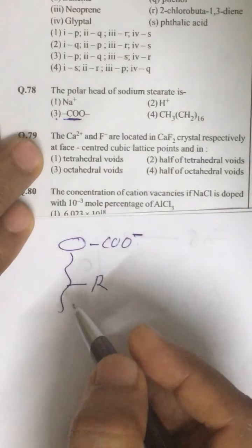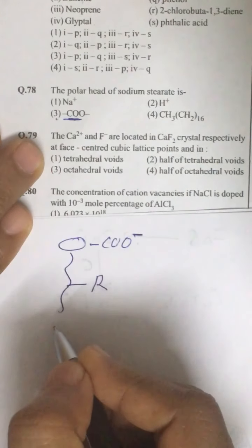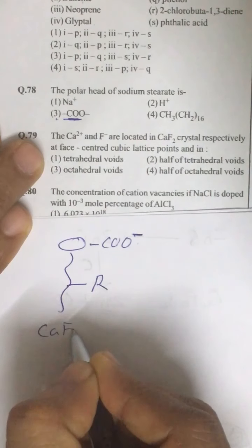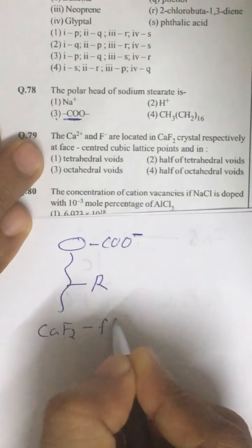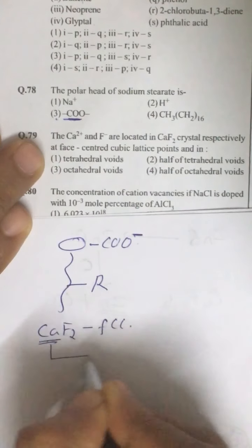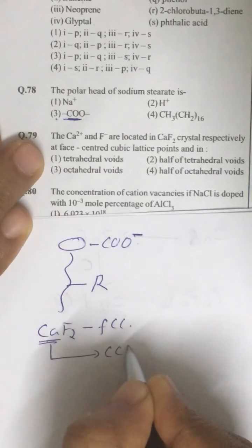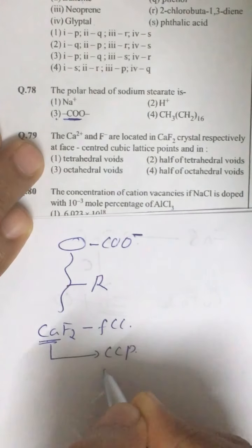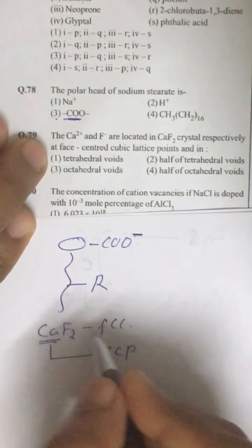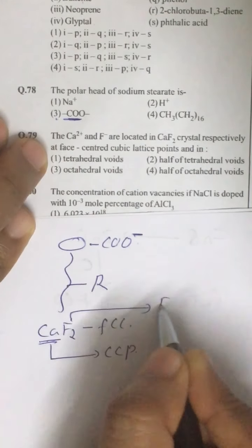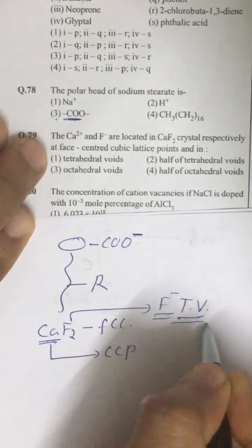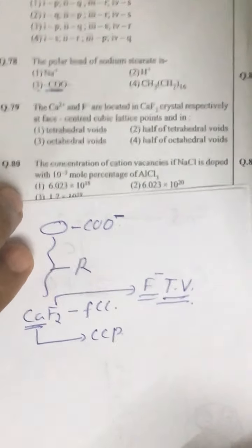Question number 79: Ca²⁺ and F⁻. CaF₂ has a CCP or FCC kind of structure. Ca²⁺, which is comparatively large, forms CCP or FCC — meaning Ca²⁺ is present at all corners and all faces, whereas F⁻ occupies all tetrahedral voids. The correct answer is the first option.